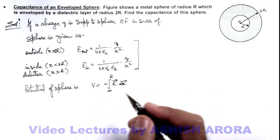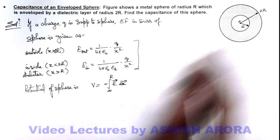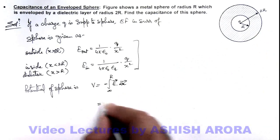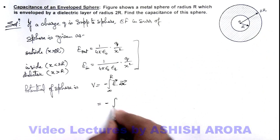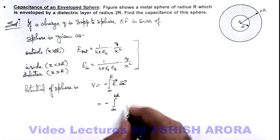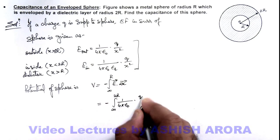With a negative sign because we are bringing a unit charge from infinity to the surface of this dielectric layer. So this can be written as minus from infinity to 2R, and here we use E as outer electric field which is 1 by 4π epsilon not into Q by x square.